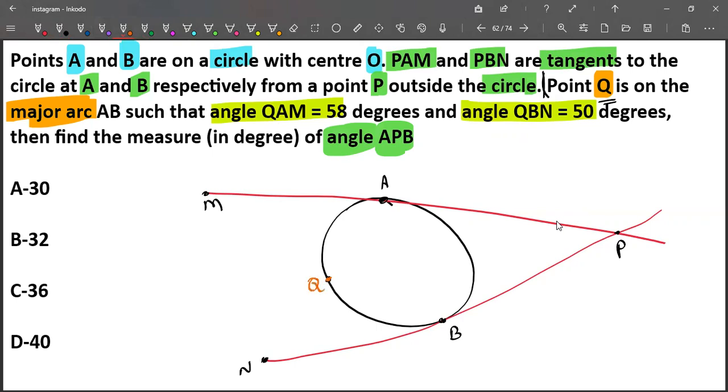Angle QAM equals 58 degrees, and angle QBN equals 50 degrees.